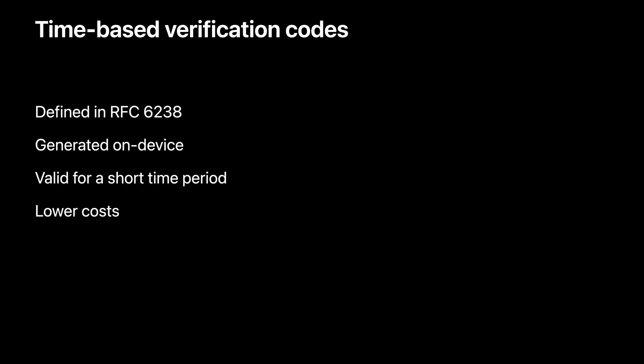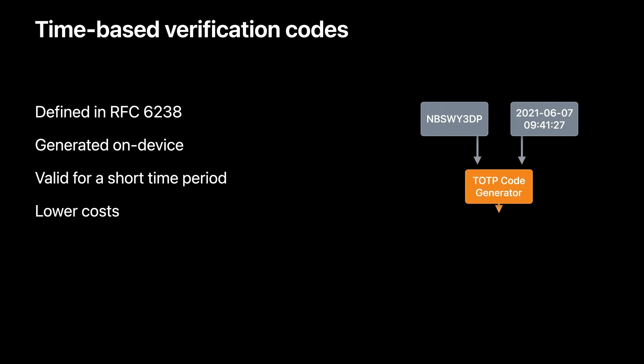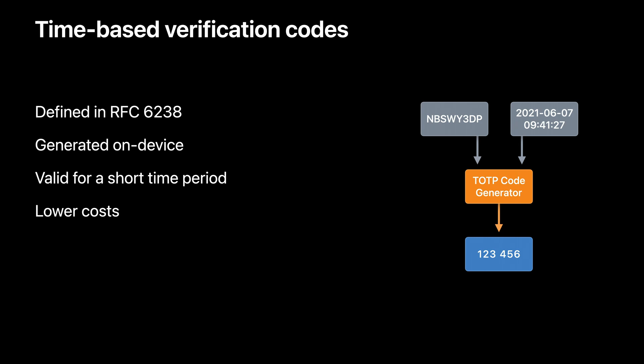Another way verification codes are done is with on-device code generators. The algorithm for doing this is defined in RFC 6238 and is called Time-Based One-Time Passwords, or TOTP. It takes a secret key and a time and produces a short numeric code based on those bits of information. Typically, an authenticator app or hardware device generates the codes. It doesn't require any communication with the service — it all happens on the device. This is a huge benefit in terms of security and user experience. Codes are valid for a short amount of time, typically 30 seconds or so, and it results in lower costs because no one has to send or receive SMS messages.